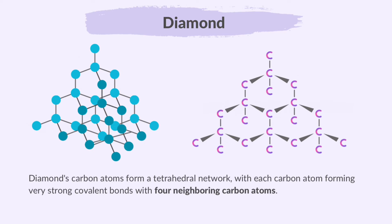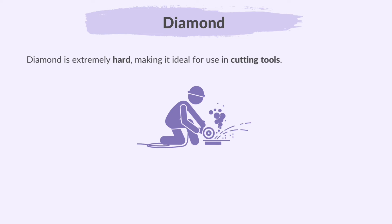Let's learn about diamond's carbon atoms. Diamond's carbon atoms form a tetrahedral network with each carbon atom forming very strong covalent bonds with four neighboring carbon atoms. In diamonds, there are no intermolecular forces between molecules. Diamond is extremely hard, making it ideal for use in cutting tools. It doesn't conduct electricity because there are no free electrons to carry a charge.